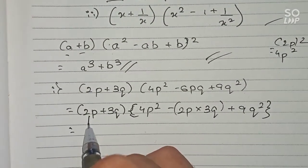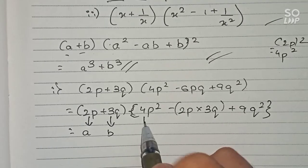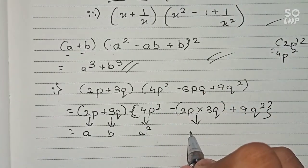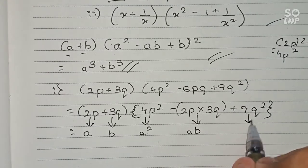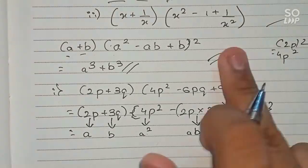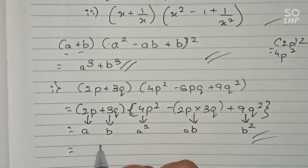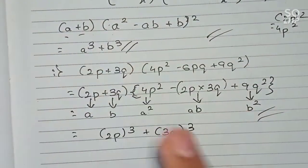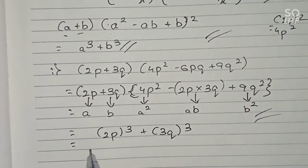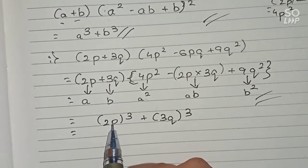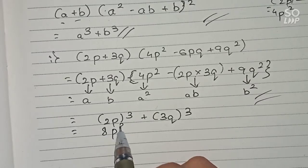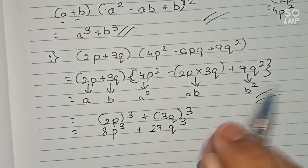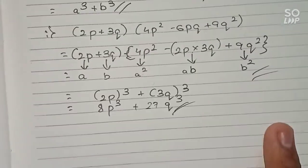We identify: 2p is our 'a', 3q is our 'b', 4p² is our a², minus 6pq equals ab, and 9q² equals b². The full expression matches the identity (a + b)(a² - ab + b²). Therefore we can write: (2p)³ + (3q)³. Simplifying: 2³ = 8, so 8p³; and 3³ = 27, so 27q³. The expanded form is 8p³ + 27q³.